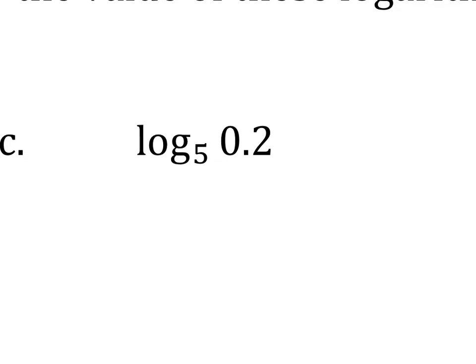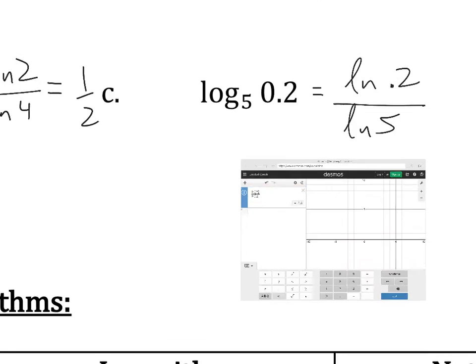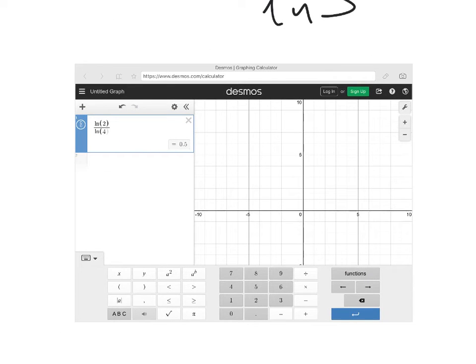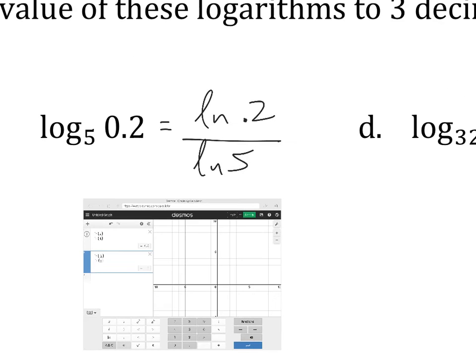And one more, if we have log base 5 of 0.2, well, that's the same as the natural log of 0.2 over the natural log of 5. And you can try that out. So that's natural log of 0.2 divided by natural log of 5, and that gives us negative 1. So this is negative 1.